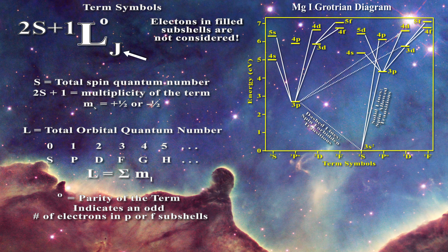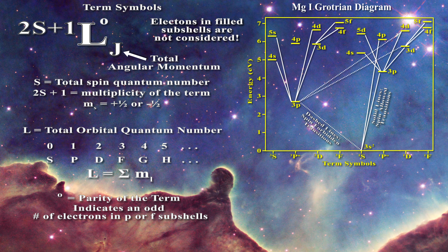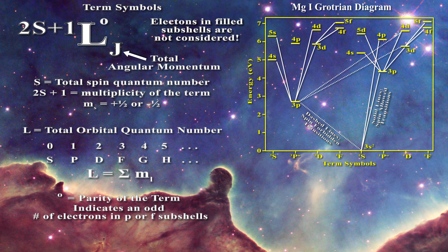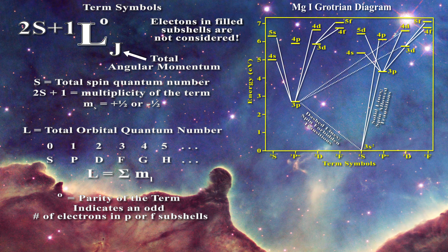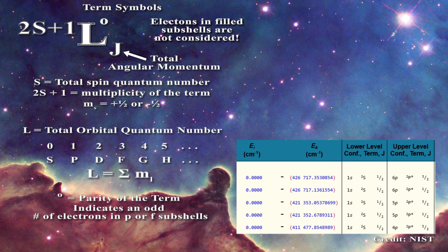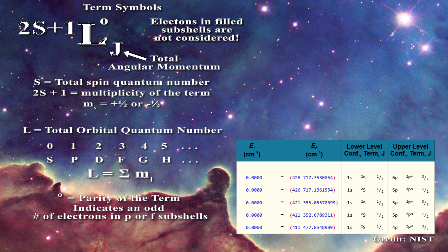Finally, a small subscript is typically noted on the right of the term symbol. This represents the value of the total angular momentum for this level, J. For our purposes we can skip how the value of J is determined, as this can be rather complicated. We can just treat the total spin quantum number, the multiplicity, the total orbital quantum number and the parity. In the NIST tables the term symbols are always provided and the value of J for the state of interest is listed separately next to the term symbol.